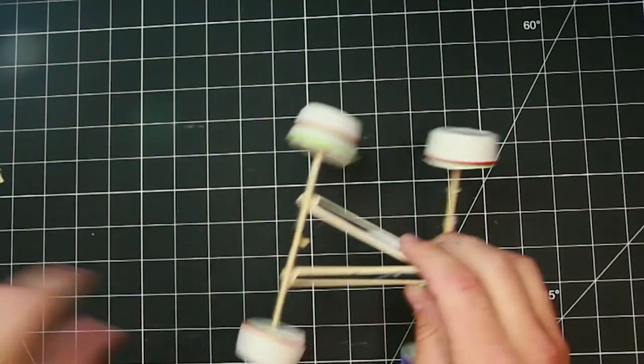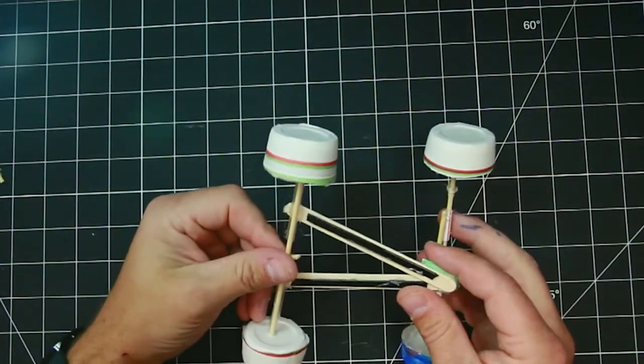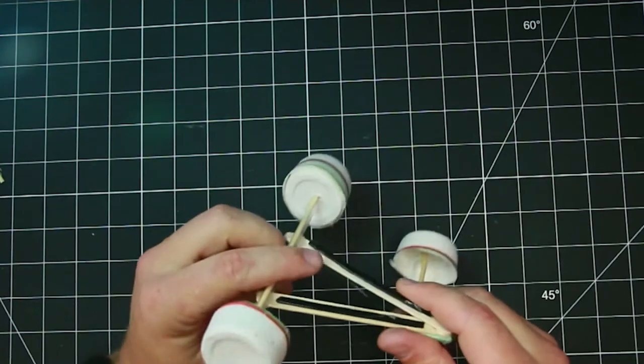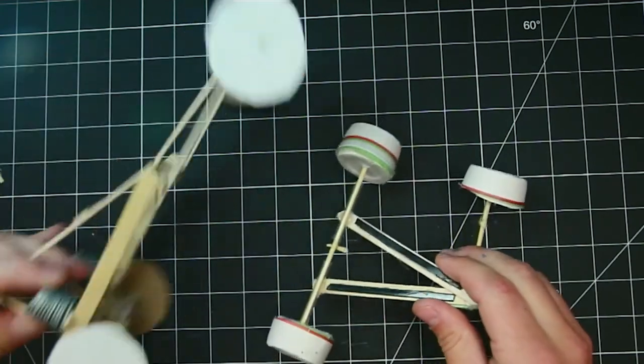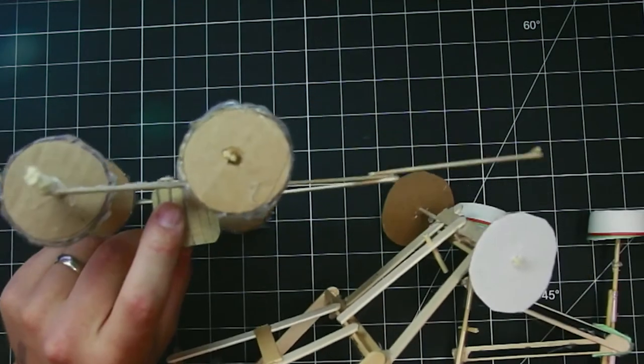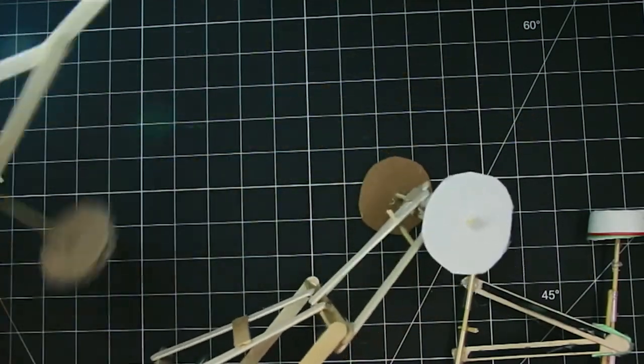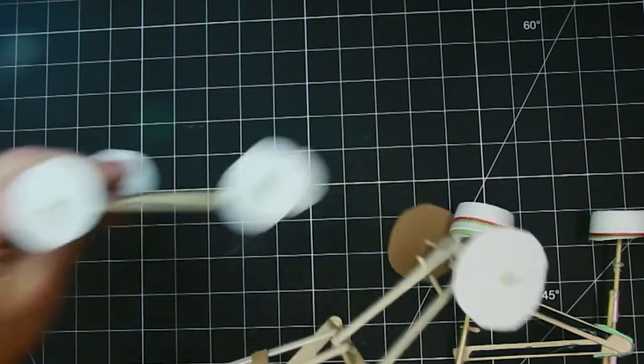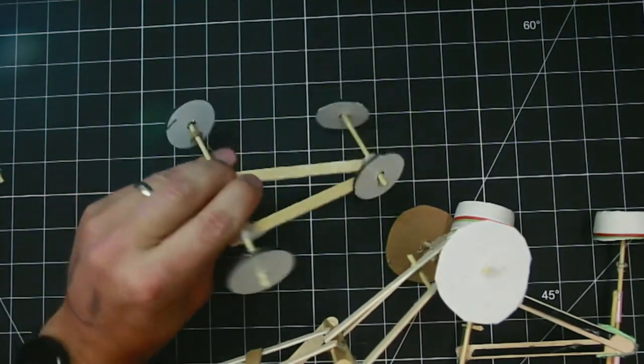So I'm going to show you the basics of making a rubber band car. Now here would be a car with Dixie Cup wheels. Here's a car with cardboard wheels, a different car that has cardboard wheels, and I'm bringing up the wheels first thing because they're super important.